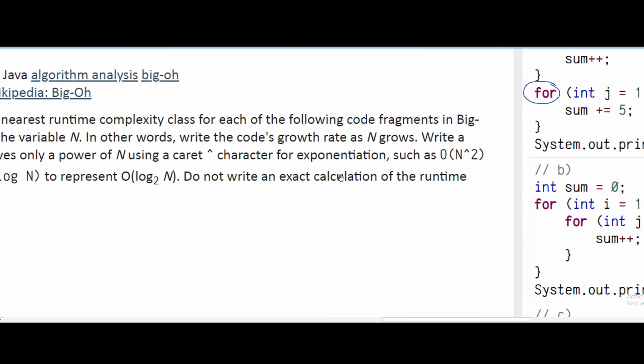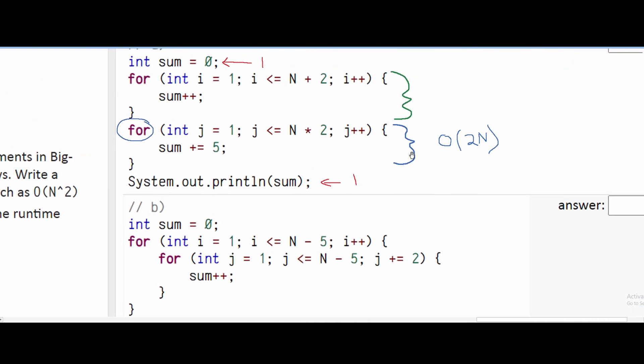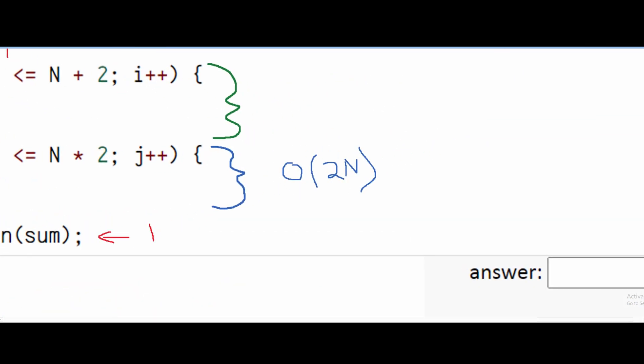However, we're told not to write the exact calculation of the runtime. This would be writing it as an exact calculation. If we're supposed to write it in a more general solution, this 2 would get absorbed into the n and we would get Big-O n as our final answer.